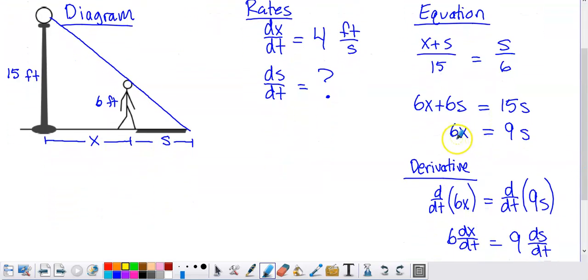Now if I take the derivative of the left-hand side with respect to T, the derivative of this, even if I use a product rule here, 6 times X, the derivative of 6 is 0. So 0 times X plus 6 times the derivative of X with respect to T is going to give us 6 dX/dt. I get a similar derivative on the right.